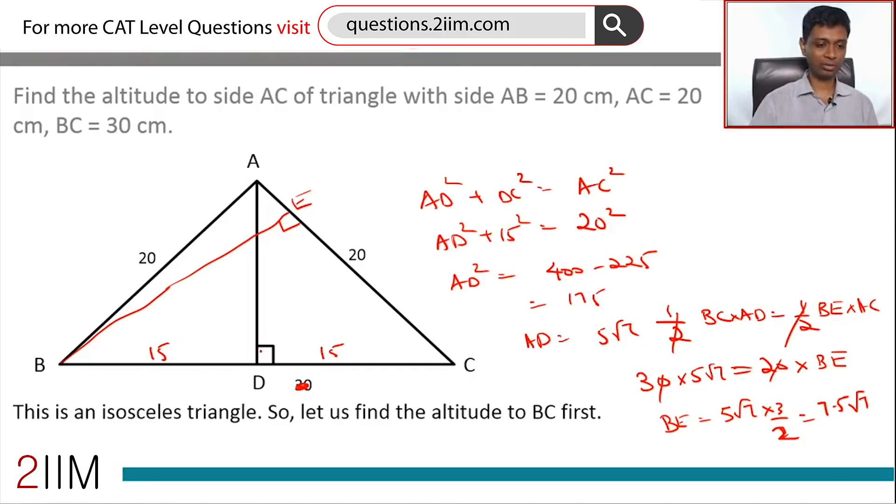We use Pythagoras theorem to find this, and then use half into base into height as area, half into base into height with any base and corresponding height, and then find BE. Technically speaking, BE does not lie on AC.